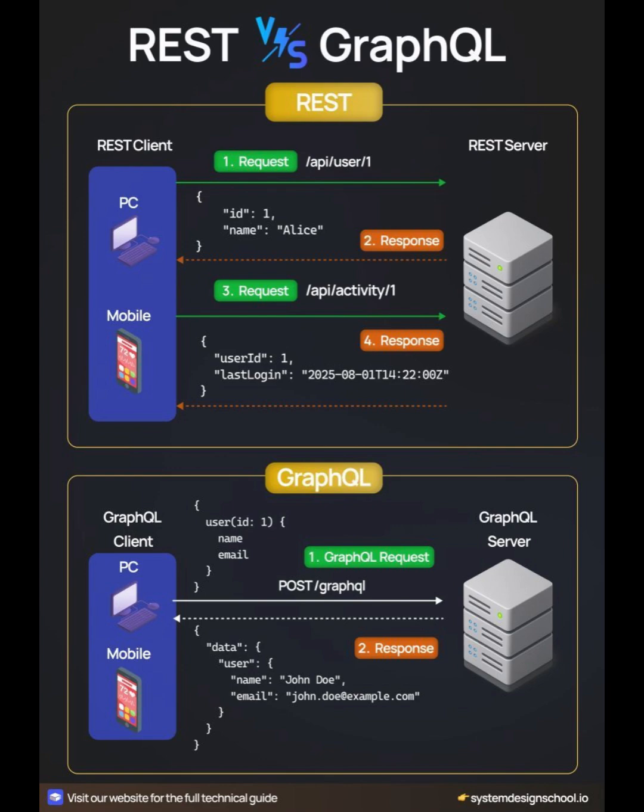REST. REST APIs use multiple endpoints, and each endpoint returns a fixed data structure. For example, to get user info and activity, the client sends two separate requests — first to get the user's name and ID, then next to get the user's last login. Each response is independent, and you often get more data than you need. This can lead to overfetching and multiple round trips.